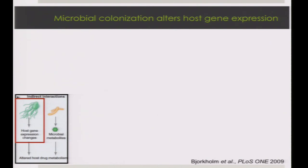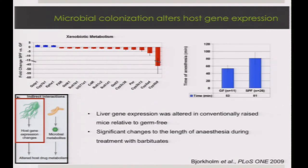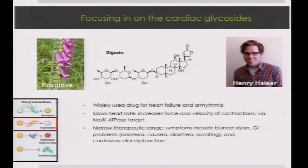It's been known that comparing germ-free to colonized animals reveals differences in gene expression that contribute to altered host drug metabolism. A study from Sven Petersen's group compared gene expression in standard SPF mice versus germ-free animals and found downregulation of multiple cytochromes in the liver. This had a functional consequence: when dosed with barbiturates, germ-free animals recovered much faster from anesthesia.